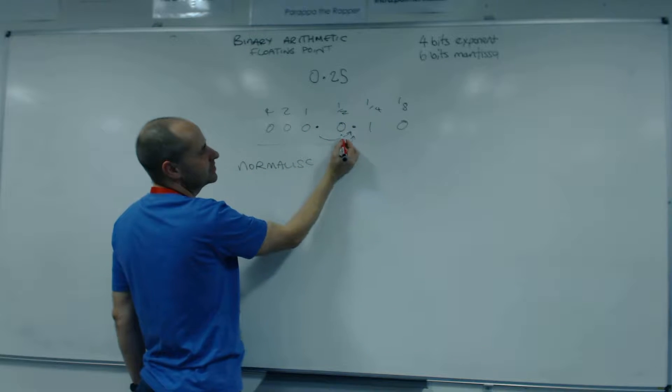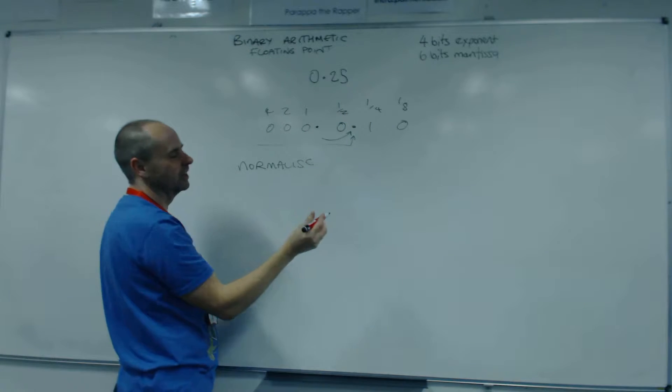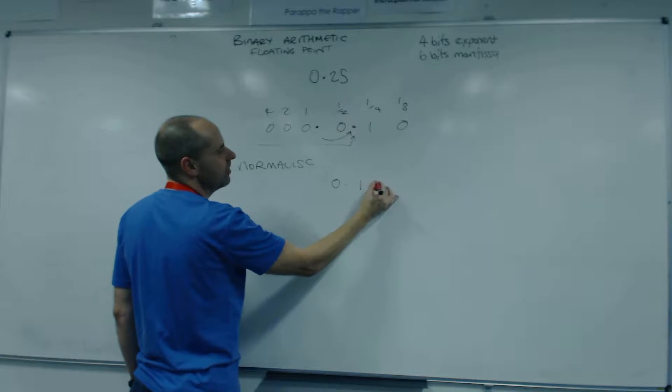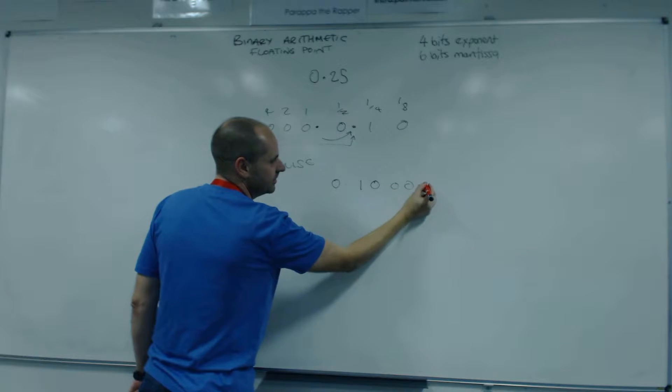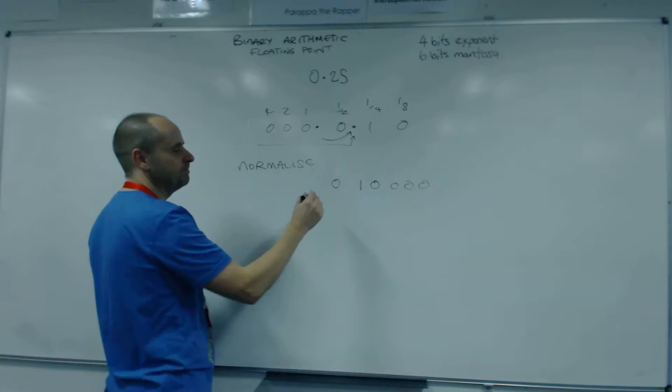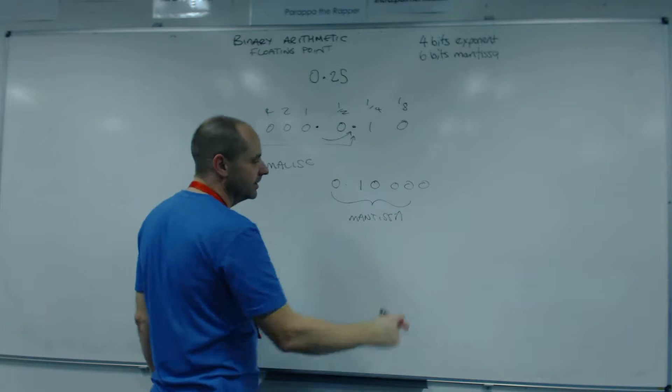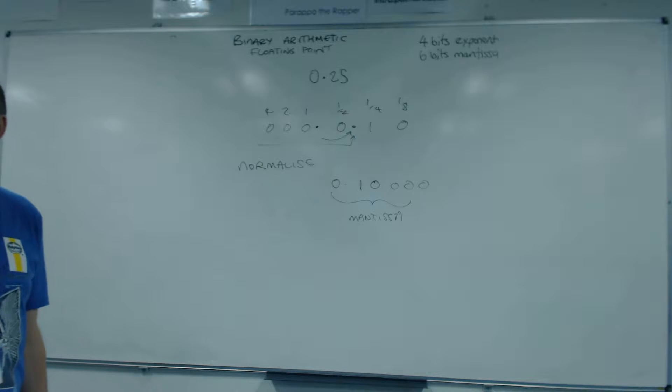Right, so we've got six bits for the mantissa. So all these noughts are meaningless. So we're just going to write down 0.10. And we've got six bits, so we have to fill the rest in. So that's my mantissa. And I will get marks for being able to correctly create a normalised mantissa.